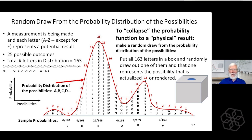If we do that and sum all of it up, we get 163. So there are 163 pieces of paper in this box. Only one has an A on it and one more has a Z on it. There are about five with Ts on them — out of the 163.